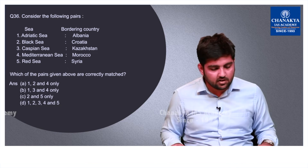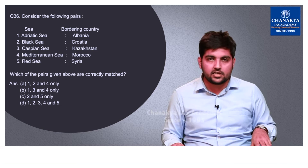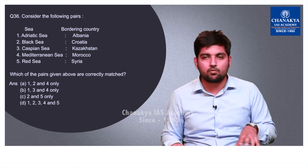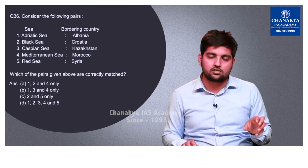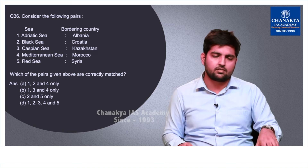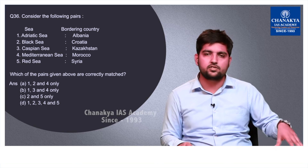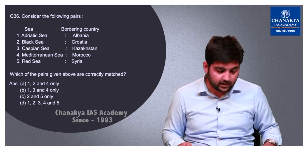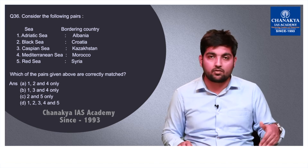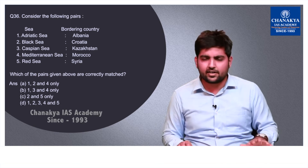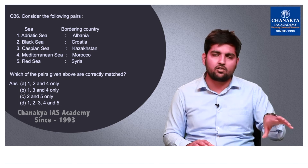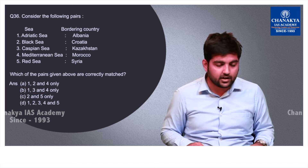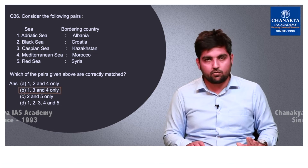Question number 36 is a matching question with seas and their border countries. This question has been repeated from previous years, as the Mediterranean Sea was asked twice in the last 5 years. Familiarity with the Middle East region and exact locations helps here. The correct option is B — 1, 3 and 4 are correctly matched.